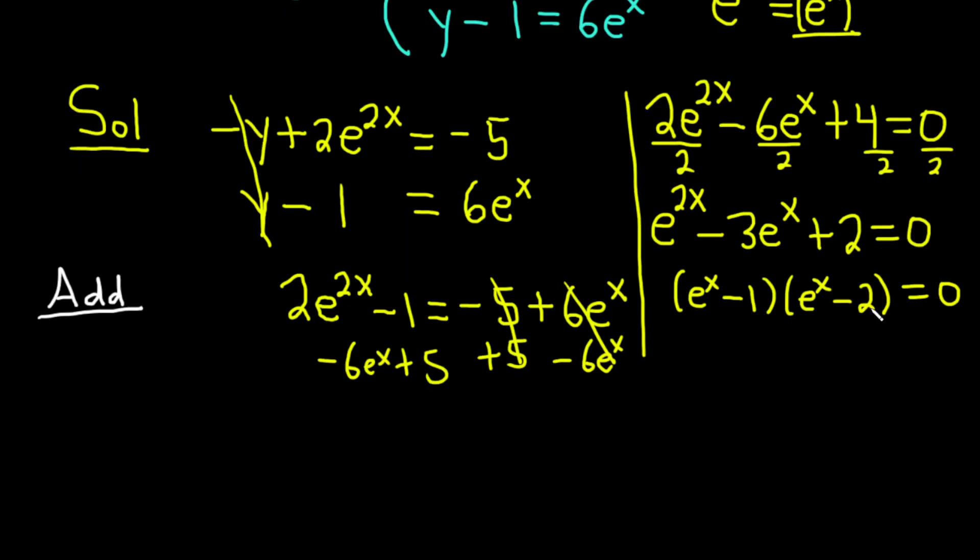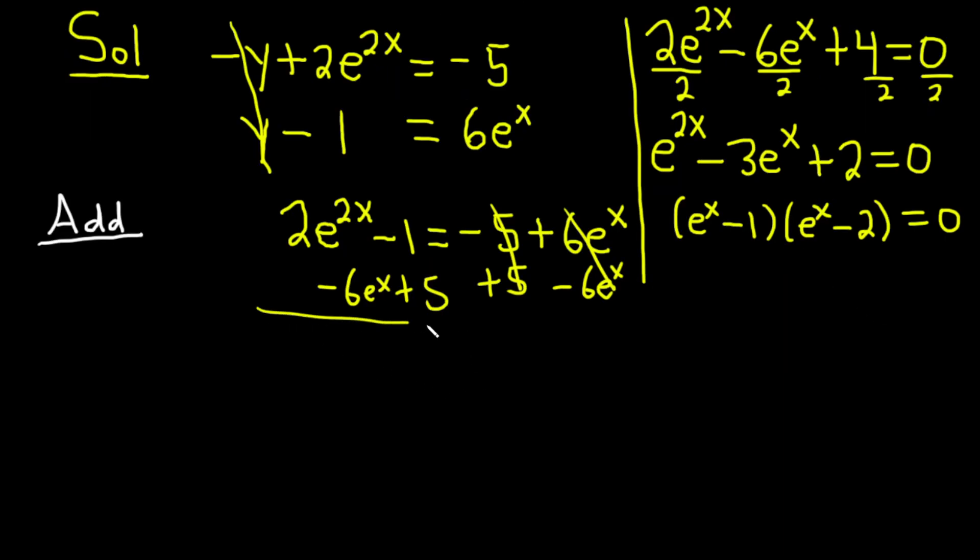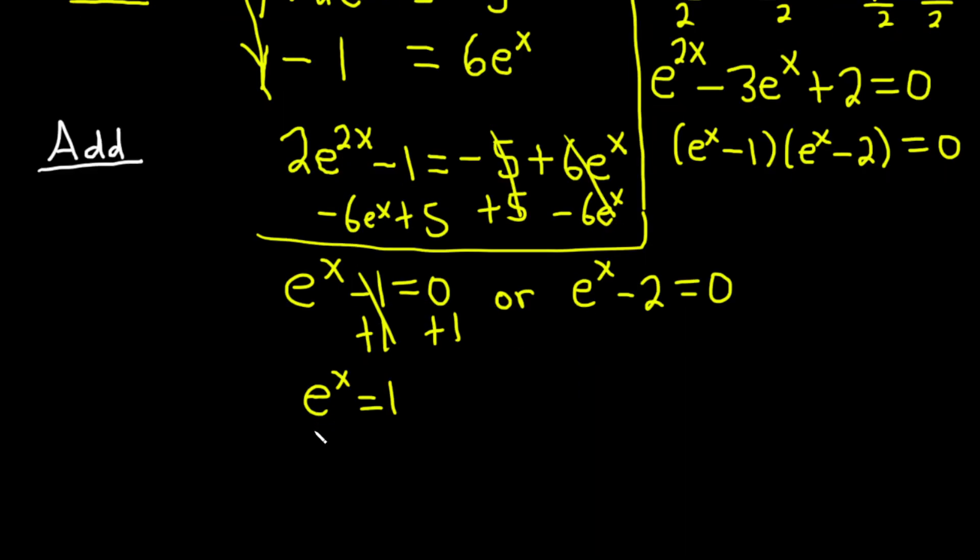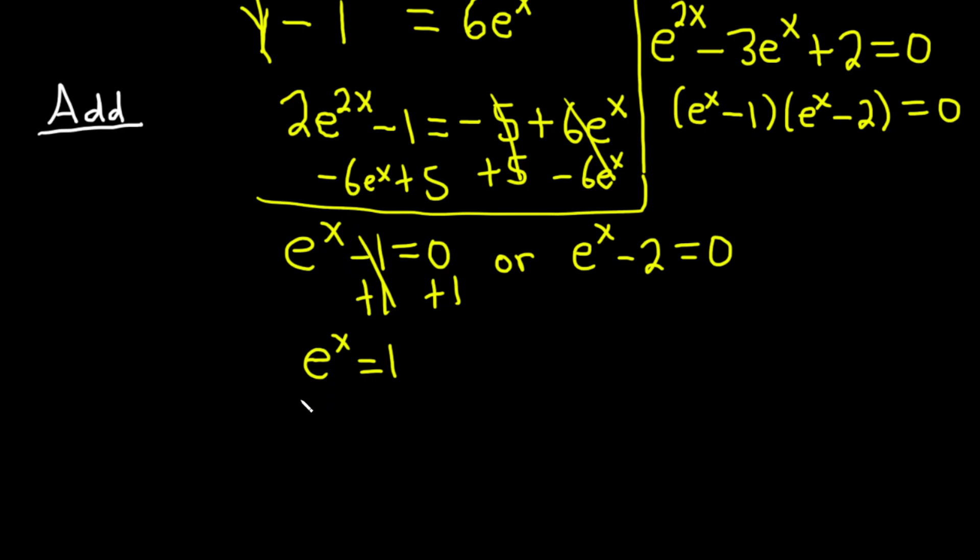So we have a product equal to 0, so we can set each factor equal to 0. So that leads us to the next step, which is e to the x minus 1 equals 0, or e to the x minus 2 equals 0. To solve these, it's pretty easy. So the first one here, we can just add 1 to both sides. So we get e to the x equals 1. And then that would mean x equals 0. I'll show some work by taking the natural log. These cancel, so you get x equals the natural log of 1, which is just 0.